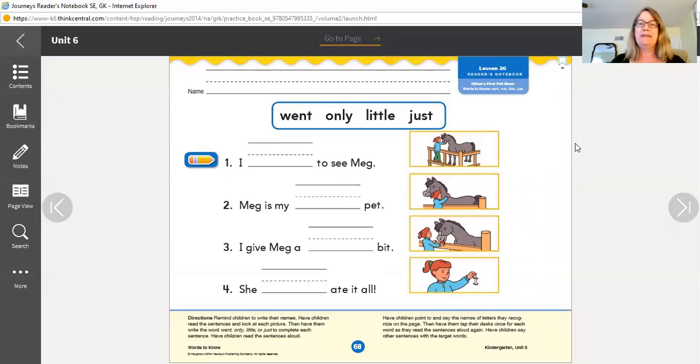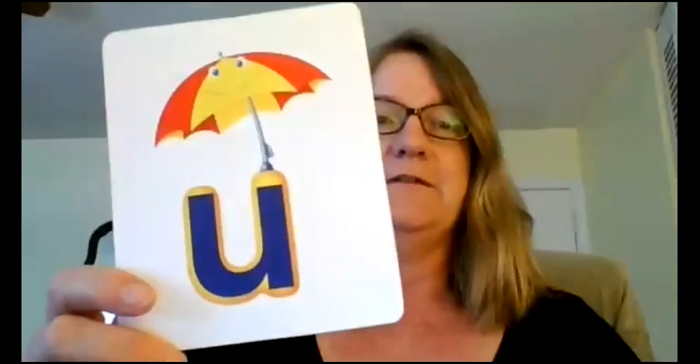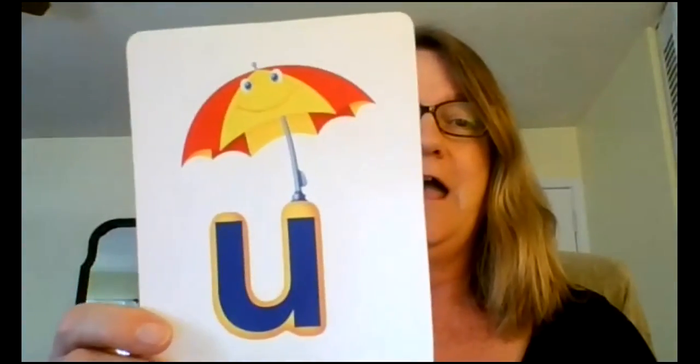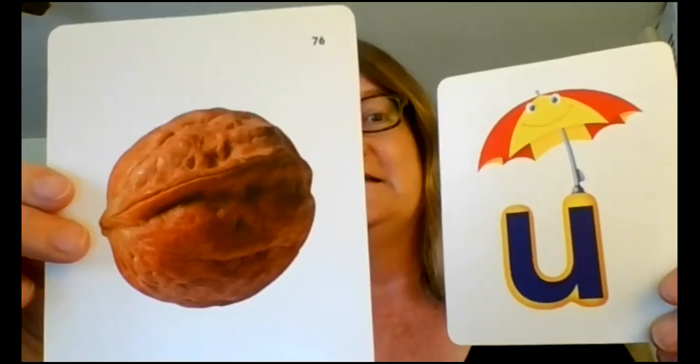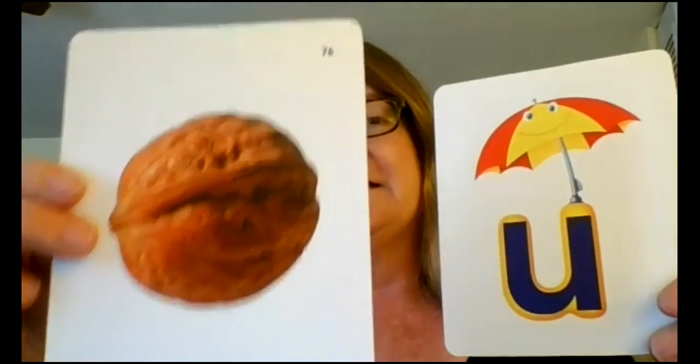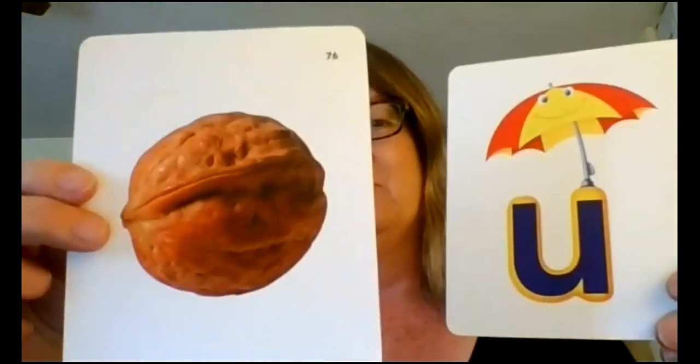Also, we are going to be reviewing the letter U. U for umbrella. U for umbrella. U. Words like sun, S-U-N. So we have U in the middle of that word. S-U-N. Or nut, N-U-T. Nut. That's the U in the middle.